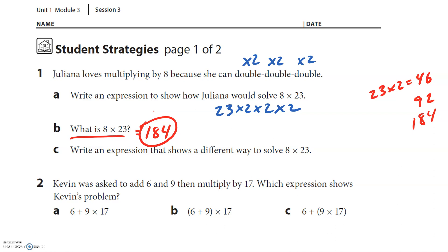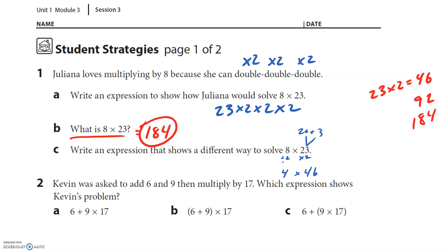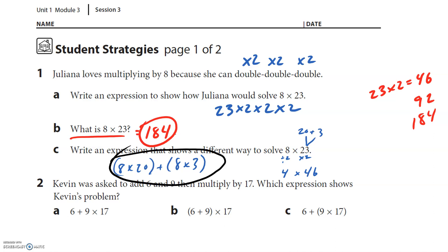Write the expression that shows a different way to solve 8 times 23. We could double and half — double the 23 and half the 8 — so that could be 4 times 46. Or we could break apart the 23: 23 becomes 20 plus 3, so we could do 8 times 20 and then add 8 times 3 to get all 23 eights. There's one option, or you can come up with another one.